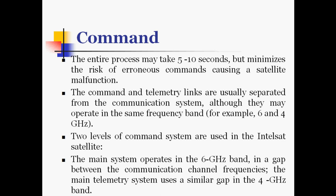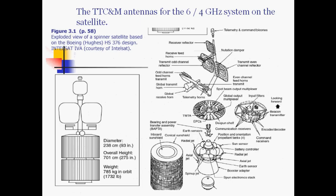Although they may operate in the same frequency band, such as the 6 and 4 GHz C band, two levels of command systems are used in the Intelsat satellites. The main system operates in the 6 GHz band in a gap between the communication channel frequencies, and the main telemetry system uses a similar gap in the 4 GHz band. We can see here the telemetry tracking command and monitoring antennas for the 6 to 4 GHz systems on the satellite. These are the telemetry and command horns, which are the antennas mounted at the top of the spinner satellite, used for the 6 to 4 GHz frequency band.